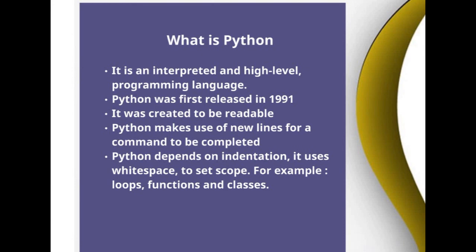So what actually is Python? Python is an interpreted, high-level programming language and it's also object-oriented. A high-level programming language is basically designed to make computer programming easier. Python was first released in 1991 and it was created to be readable, so that means that even if you come from a non-technical background or field, this is probably the easiest language you can learn in order to start coding.